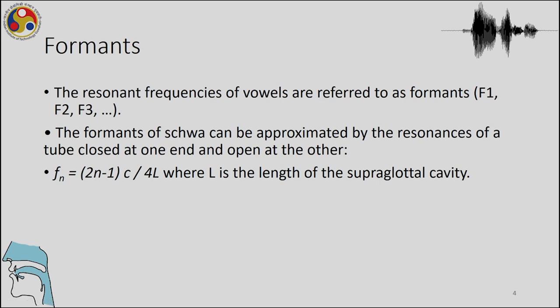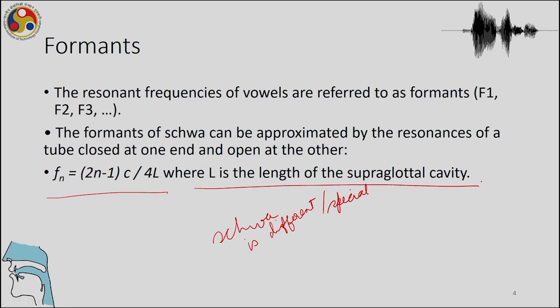The formants of schwa can be approximated by the resonances of a tube closed at one end and open at the other. Schwa is special because it can tell you about the length of the vocal tract. The formula is: Fn = (2n - 1) × C / 4L, where L is the length of the supraglottal cavity.